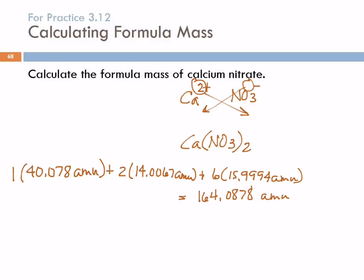We do need to think about significant figures here. I think it's best to think in terms of addition: this has three decimal places, this has four, and that has four. So the third decimal place is the last significant figure. When calculating with formula masses, it's best not to round them off until the end — usually your formula mass is not going to limit the precision of your final answer; usually it's the mass you started out with.